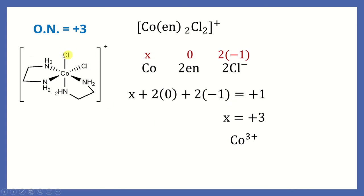For the next example, we already know the charge of the complex ion is +1. Inside the complex: cobalt is x, 2 ethylenediamine are neutral (0), and 2 chloride ions give −2, so x + 0 + (−2) = +1, which gives x = +3. So cobalt again has oxidation number +3. It's not so complicated to find out.